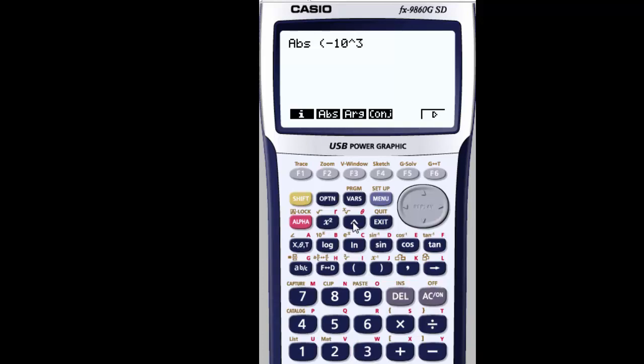And to that, I'm going to add, what did I say, plus two, plus two. I'm going to close my parentheses because I'm done. And then I'm going to hit Execute. And when I do that, I see I get 998.